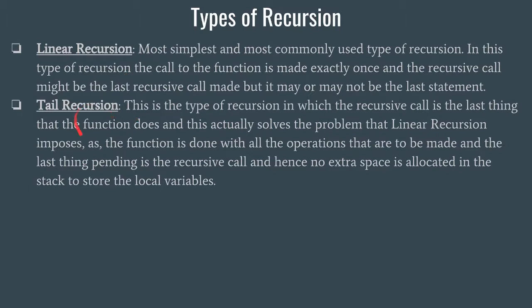Next is tail recursion. In tail recursion, the recursive call is both the last function call and the last statement of that recursive code. There is a problem with linear recursion: if your recursive call goes too deep — say 10,000 recursive calls — the stack may overflow. Tail recursion solves this problem because there are no pending statements after the recursive call, so the compiler can dump the local variable values.